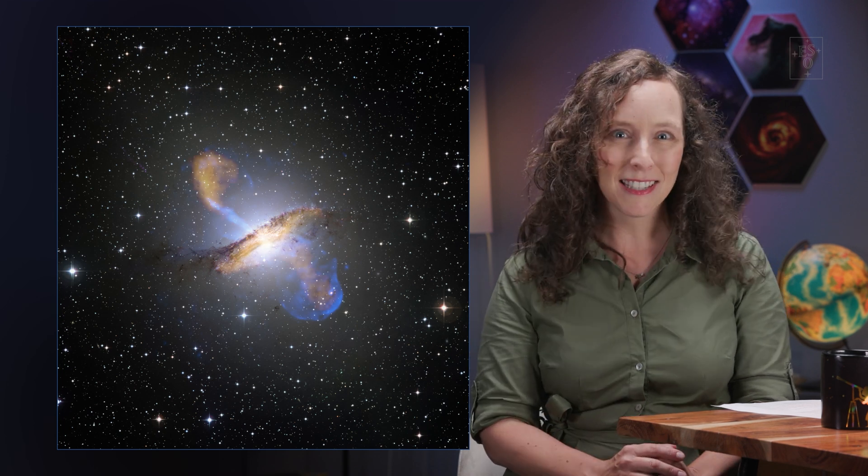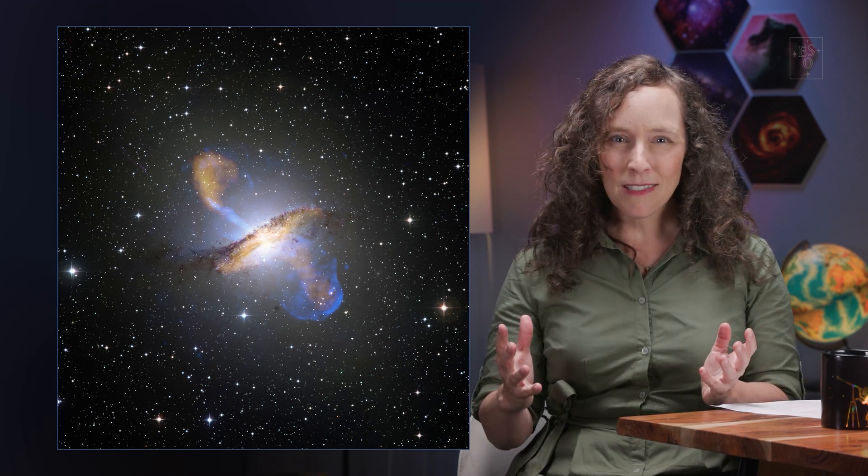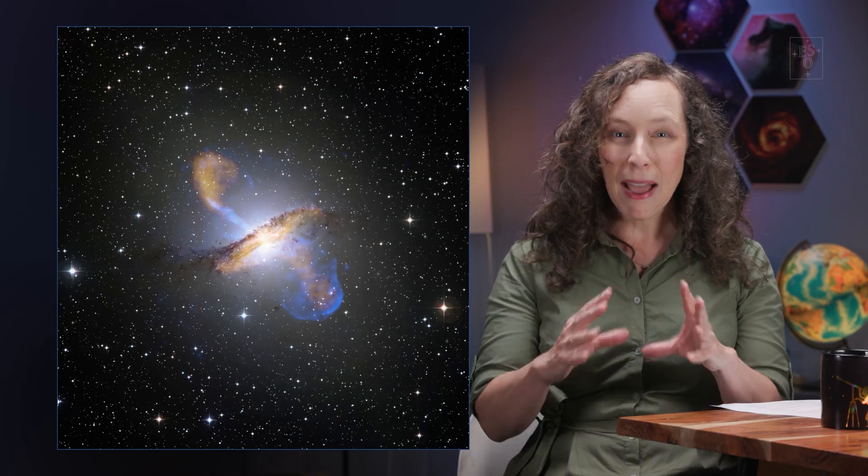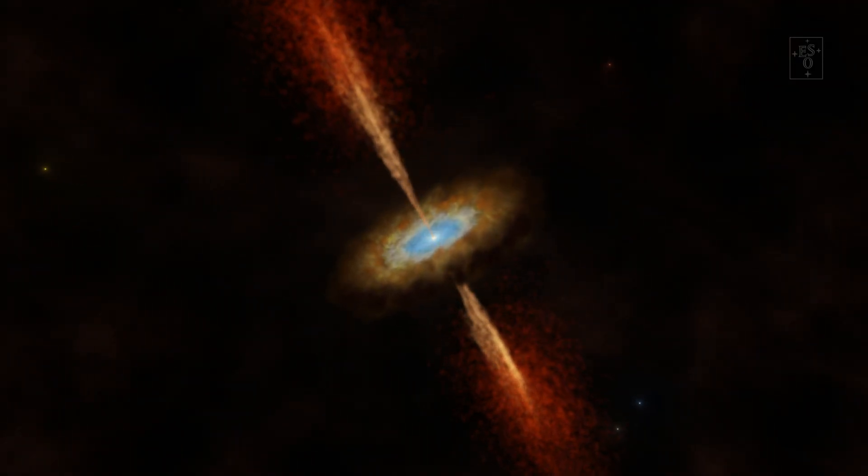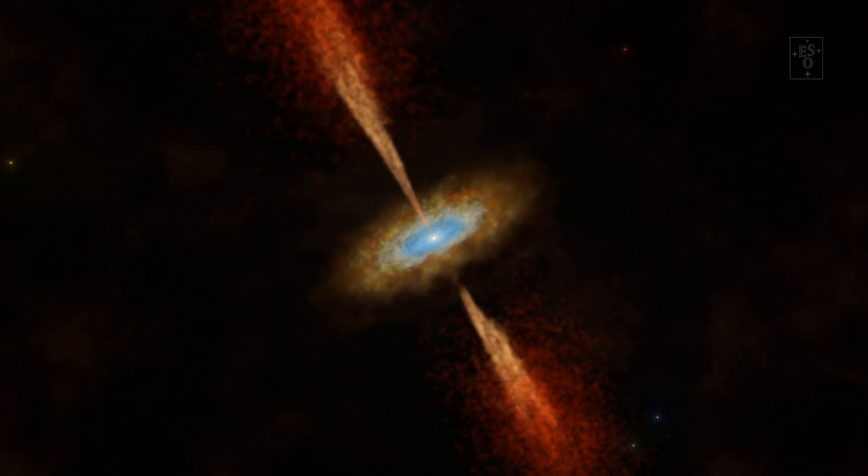This way we can detect and study phenomena that otherwise we would have never even known were there. This image shows the distant galaxy Centaurus A as seen in visible light. It's pretty but not that spectacular. But now look and see what happens if we add in X-ray and submillimeter light. All of a sudden you can see not just the galaxy but also the powerful jet that is being launched by the supermassive black hole at the center of this galaxy and which was completely invisible before. Pretty impressive, eh?